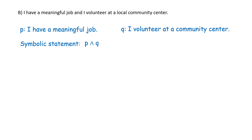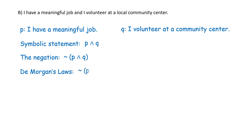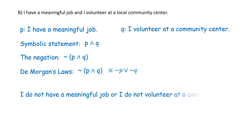We want the negation of P and Q, so we want not, in parentheses, P and Q. DeMorgan's Laws tells us that to negate that compound statement P and Q, it equals not P or not Q. In words: 'I do not have a meaningful job or I do not volunteer at a community center.'